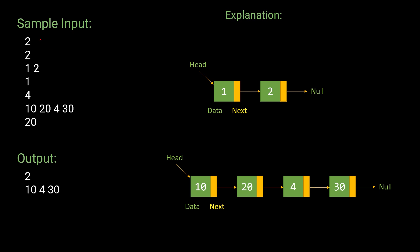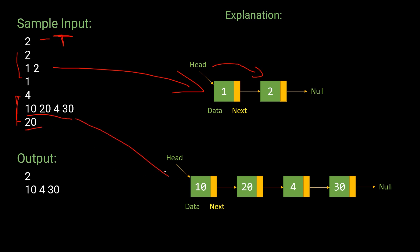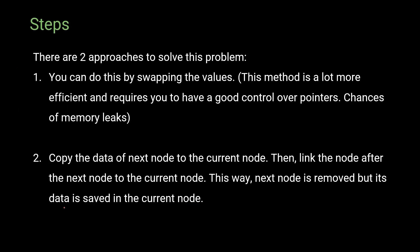Here is the sample input. The first line is T, the number of test cases. In the first test case, there are two nodes: 1 and 2, and we have to delete the first element — node 1. The output would be only 2. For the second test case, we have four nodes: 10, 20, 4, 30, and we have to delete 20. The output would be 10, 4, 30.